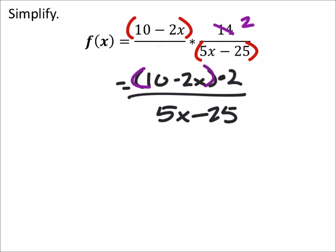For example, 10 minus 2x, both those numbers are even. So I can factor out 2, leaving us with 5 minus x. Now that was multiplied by 2 on the other side. If I use the commutative property, I can put that in front, which gives me 2 times 2.